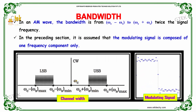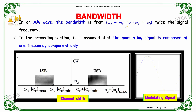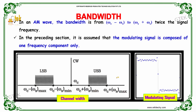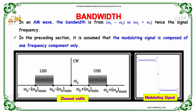Bandwidth: in an amplitude modulated wave, the bandwidth is from omega_c minus omega_s to omega_c plus omega_s — so twice the signal frequency.